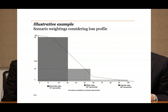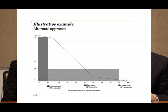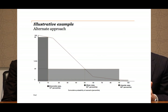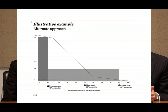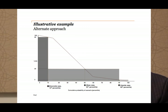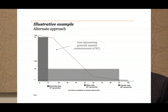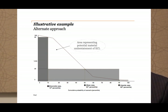That contrasts with an alternate approach you might take if you didn't have regard to what the loss profile looked like, which might be simply to say: in determining my downside scenario I've gone to the 10th percentile, so I'll just give that a 10 percent weighting. In the scenario on the screen, what that might result in is a material understatement of the losses — in particular if the losses that arise in the base case scenario are significantly lower than you get in that downside scenario.